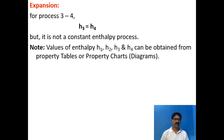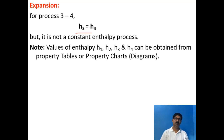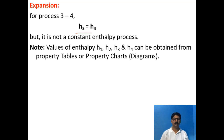For the expansion device, process 3 to 4: since it is an isenthalpic process, H₃ = H₄. The values of enthalpy H₁, H₂, H₃, and H₄ can be obtained from property tables, charts, or diagrams — I will explain how to read these when solving numericals. With this, I conclude lecture number 2 and will continue the topic in lecture number 3. Thank you.